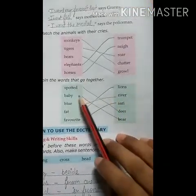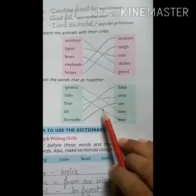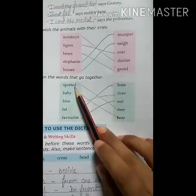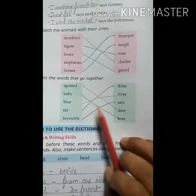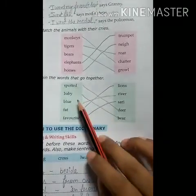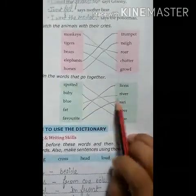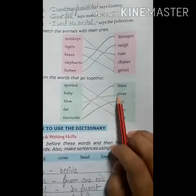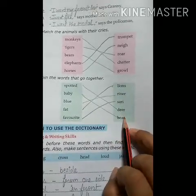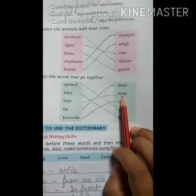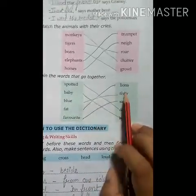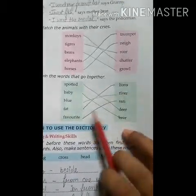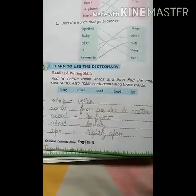Next exercise: join the words that go together — spotted deer, baby bear, blue river, fat lions, favorite sari.